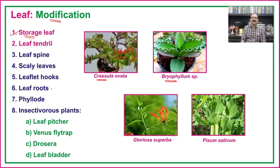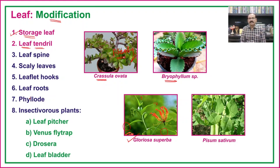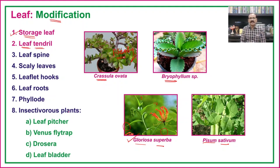In certain plants, leaves are modified into tendrils. In Gloriosa superba and Pisum sativum, the terminal part of the leaves is converted into a tendril-like structure. These curled terminal parts of the leaves are responsible for providing support during climbing.